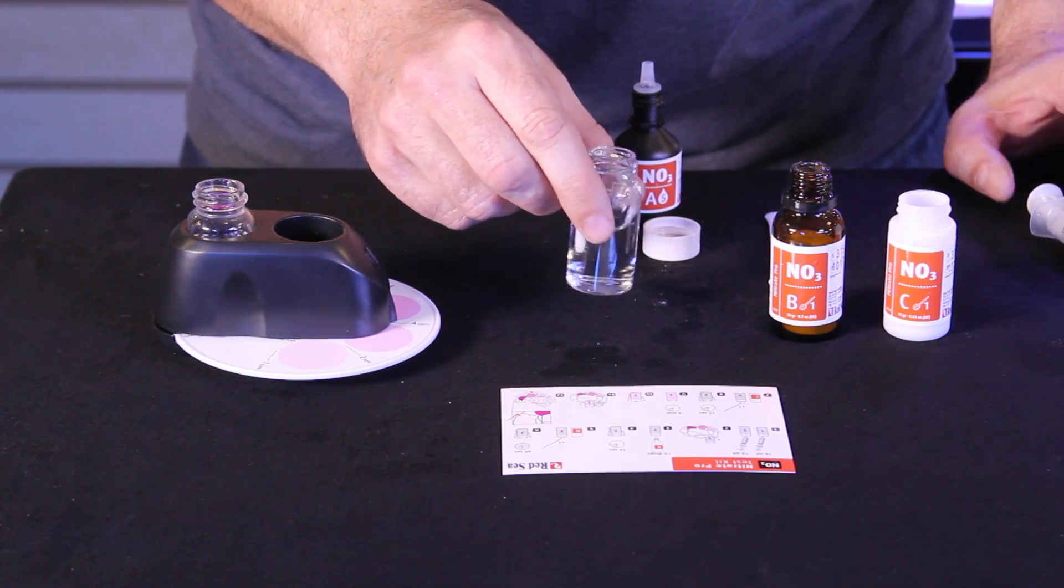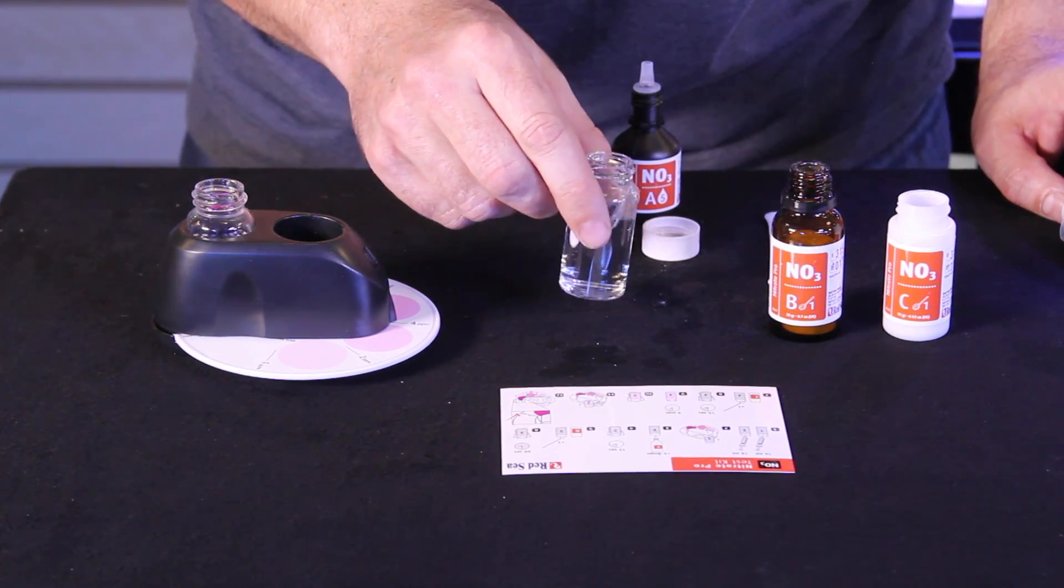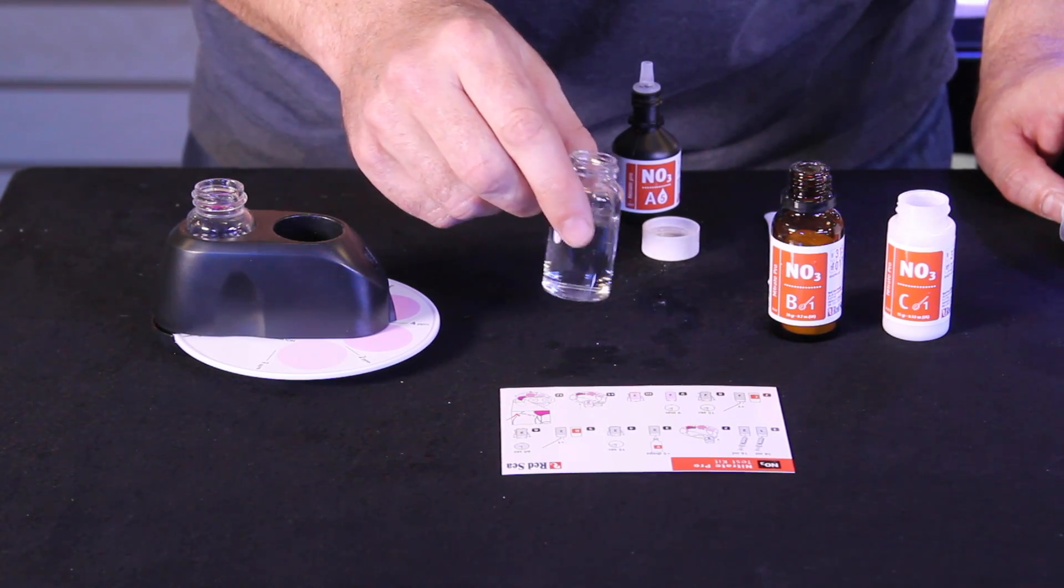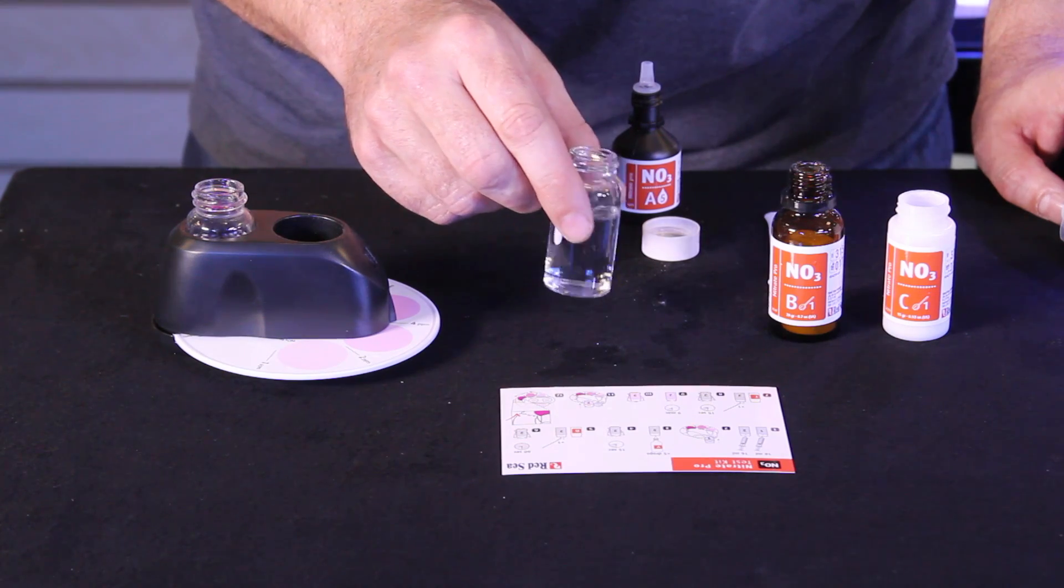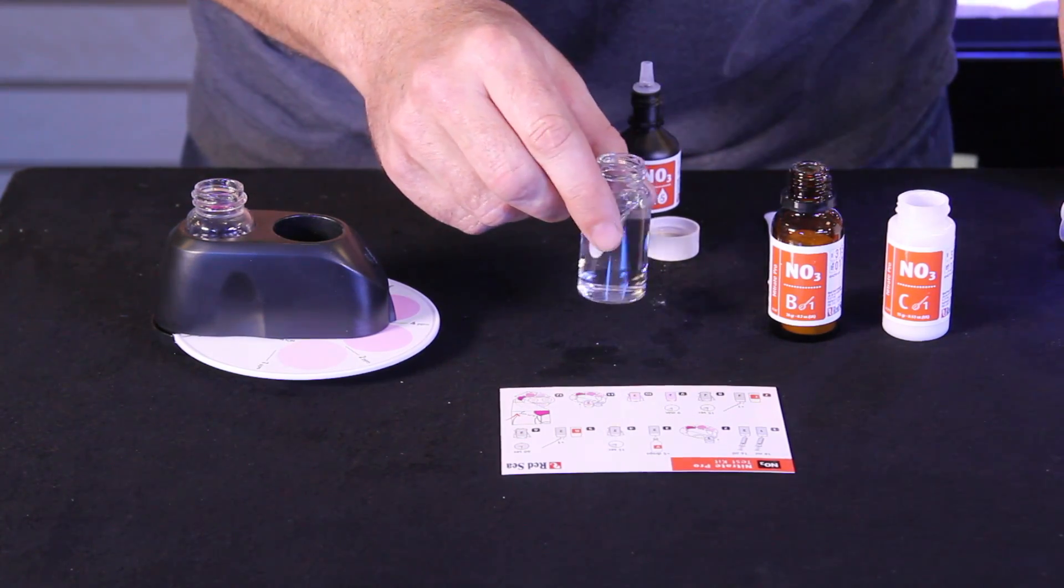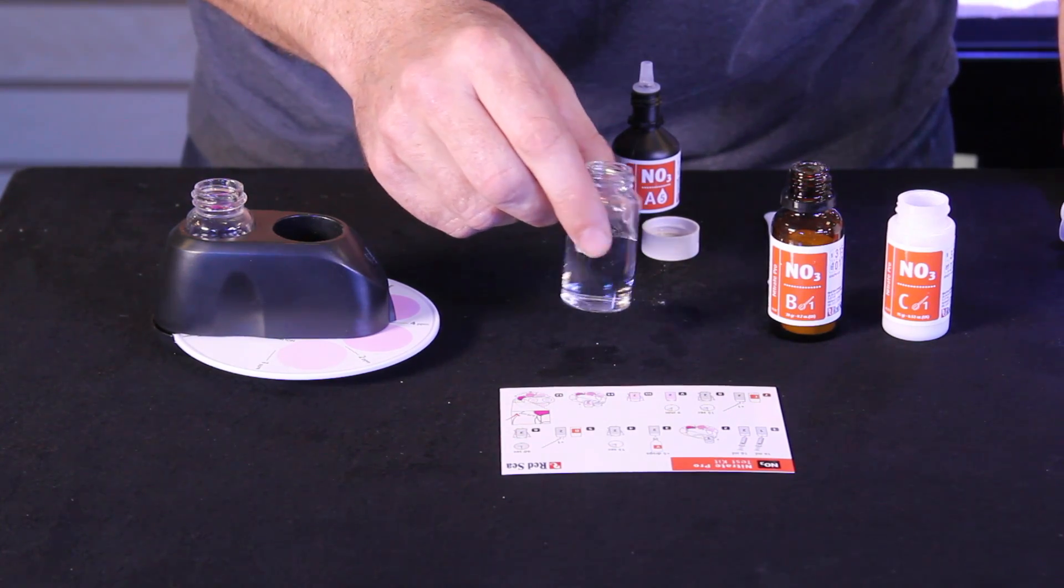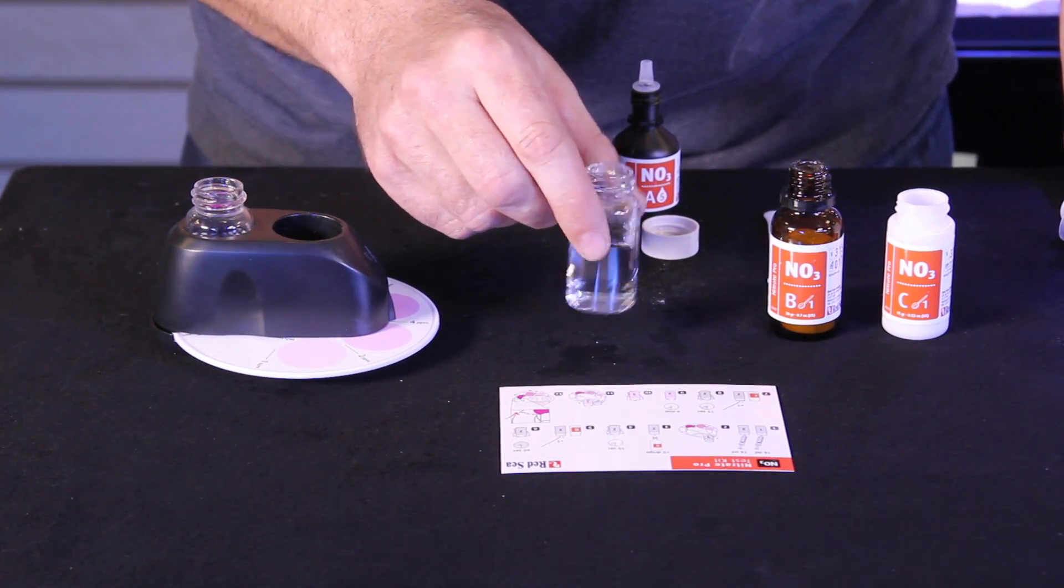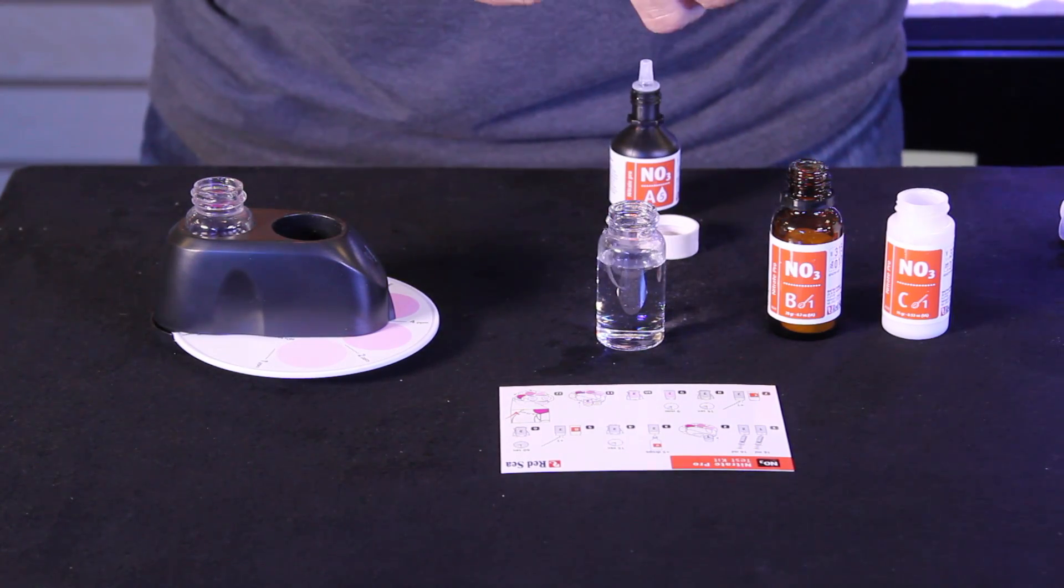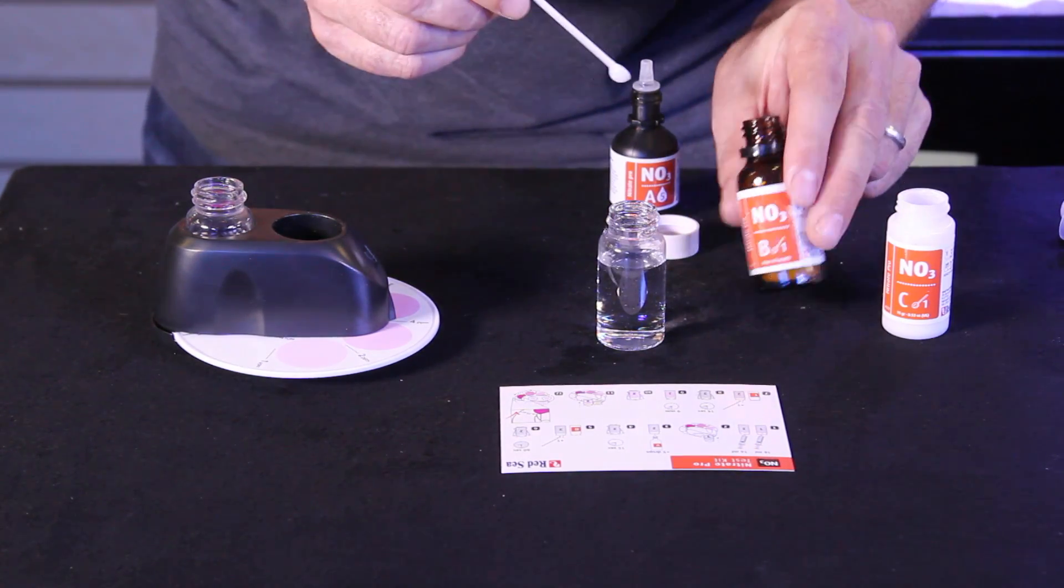The next step will be again to add one level scoop of reagent B. The steps are the same as for the low range tests except that in our vial here we have only one mil of water from the tank and 15 mils of RO water. Now we're going to add one level scoop of reagent B.